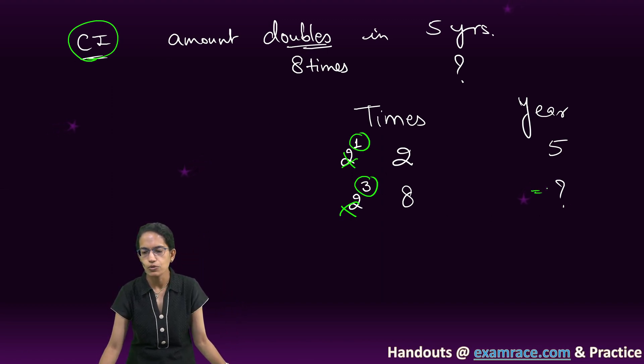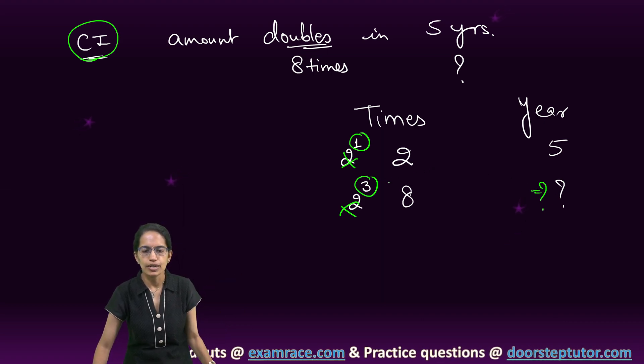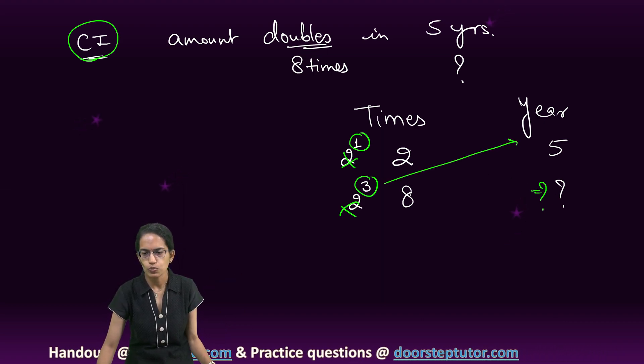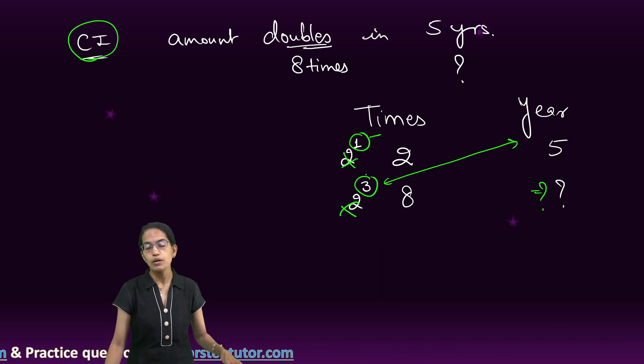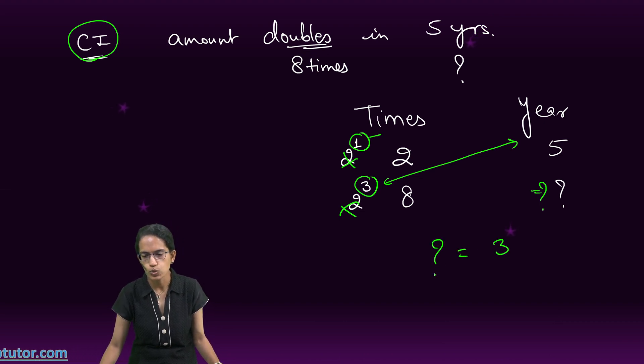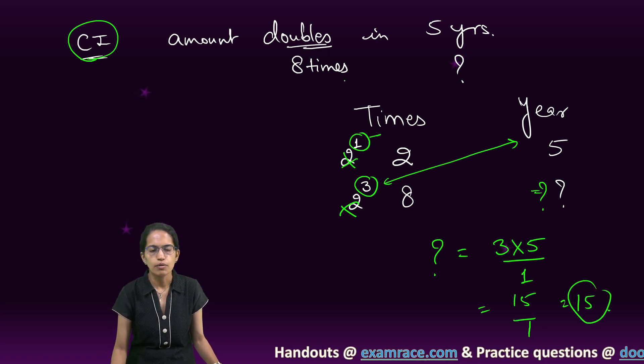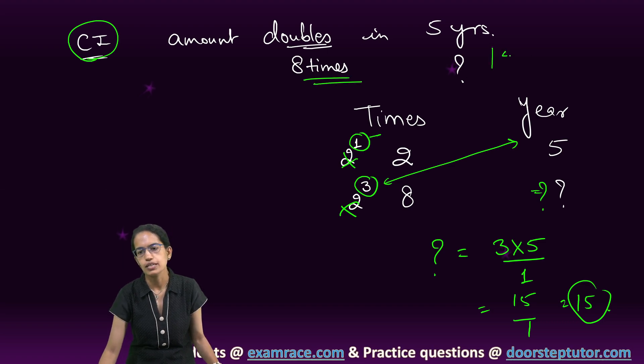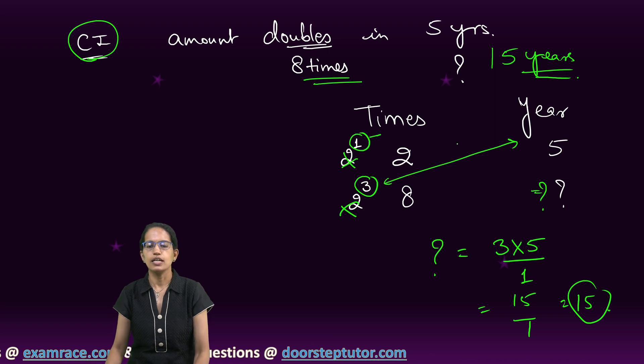Now, I have to find out in how many years. How would I do it? The same thing, I would multiply this exponent value with the year and divide it with the exponent of the preceding values here. What I do is question mark equals 3 into 5 divided by 1 which is 15 by 1, that is 15. Therefore, the amount becomes 8 times in 15 years and that's my answer.